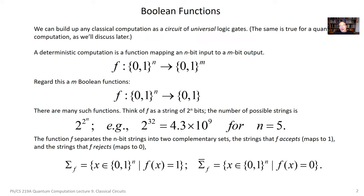I want to talk about circuits in the context of classical computation today. We can build up any computation we want to do as a circuit of logic gates, which are chosen from some universal set — universal just meaning that set of gates is sufficiently rich that we can use it to compute any function that we're interested in. For today, we're imagining a deterministic computer: you ask it a question and it gives you a definite answer rather than some distribution of answers governed by some probability distribution.